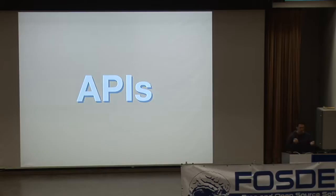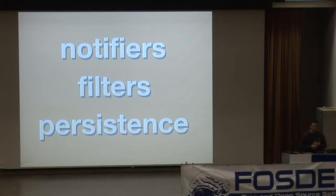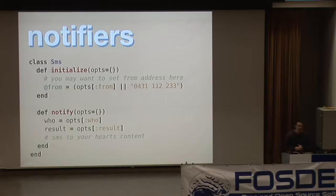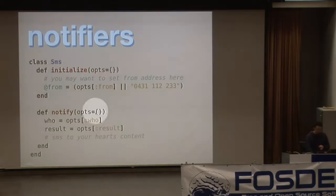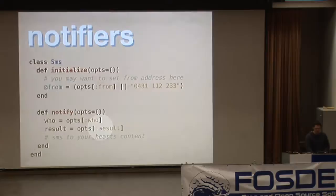Probably the coolest thing about Flapjack is the APIs. I truly believe that all parts of the monitoring life cycle should have as many hooks as possible so you can customize Flapjack to fit your environment. There are three APIs that Flapjack exposes: the notifiers API, the filters API, and the persistence API. The notifiers API is very simple — you create a Ruby object, in the constructor you get passed a list of options, and then you implement a notify method. When the notify method is called, it's passed the person we need to notify and the result we need to notify about.